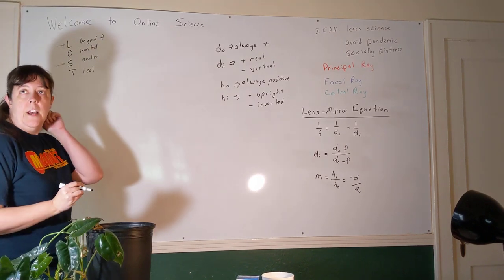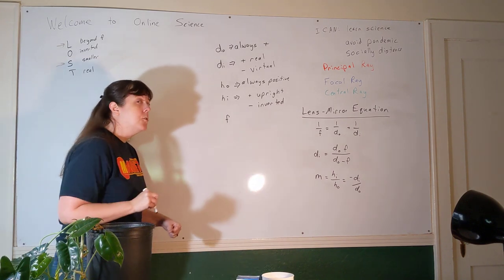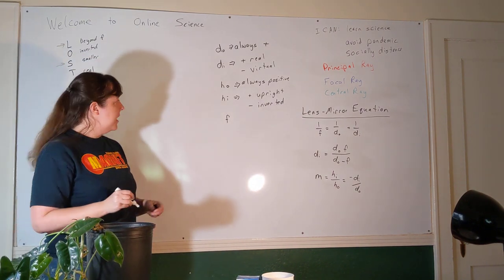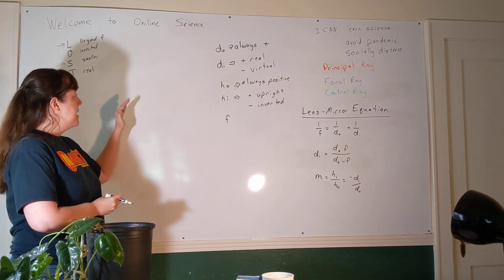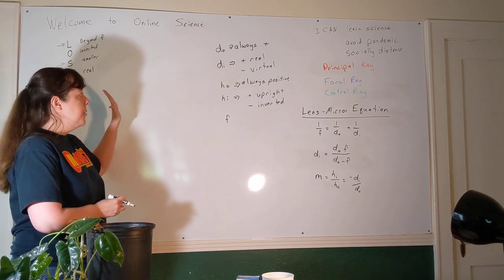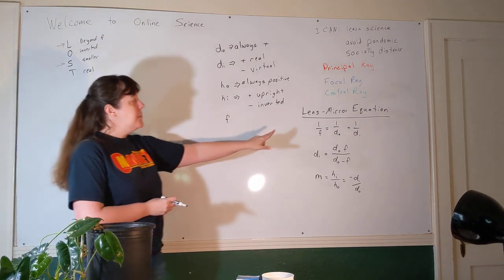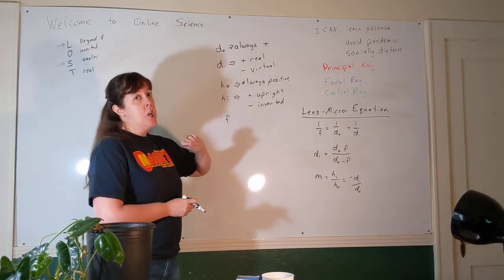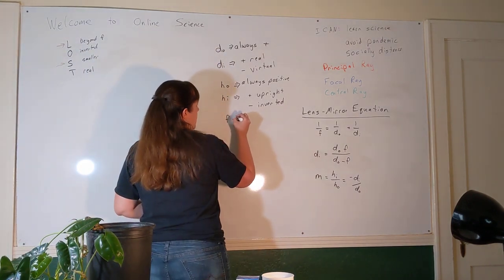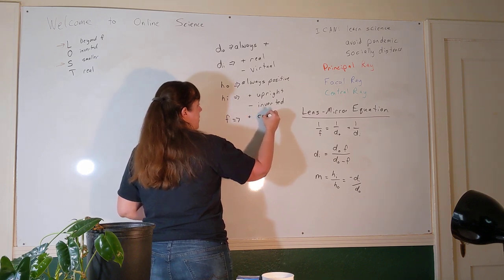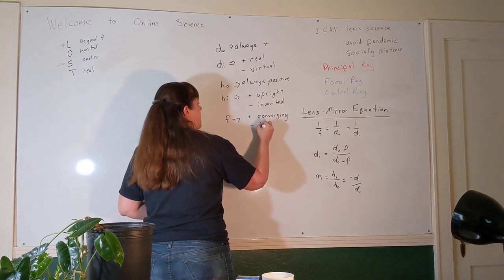And there's one more thing we have to give a sign convention for. If I flipped the curvature of the mirror, if instead of having it be a concave or converging mirror, I made it a convex or diverging mirror, then I would not get the same image properties for an object at the same position. Which means there has to be something that changes in this equation, and the thing that changes is the sign for the focal length. The focal length is positive for a converging mirror and negative for a diverging mirror.